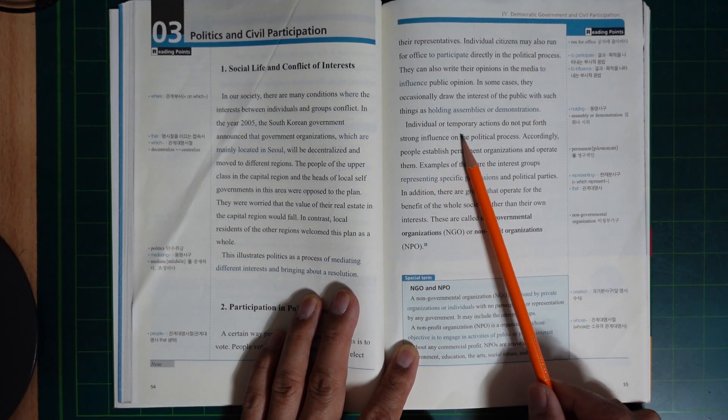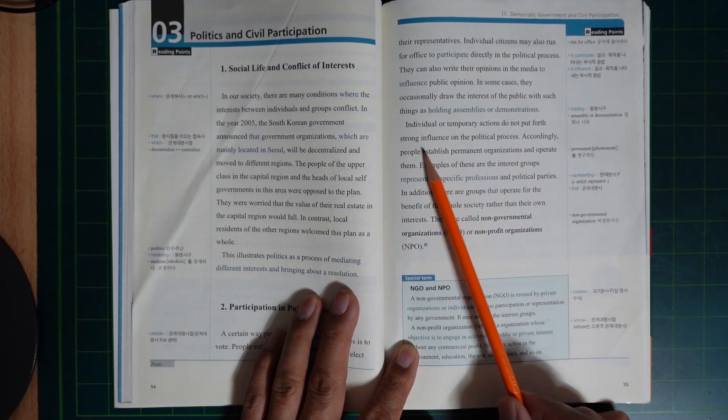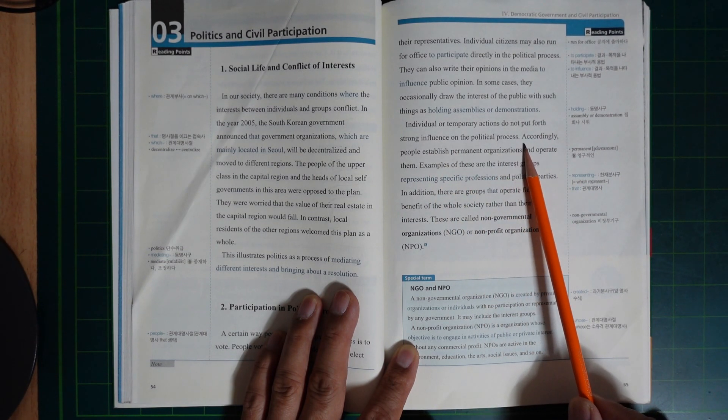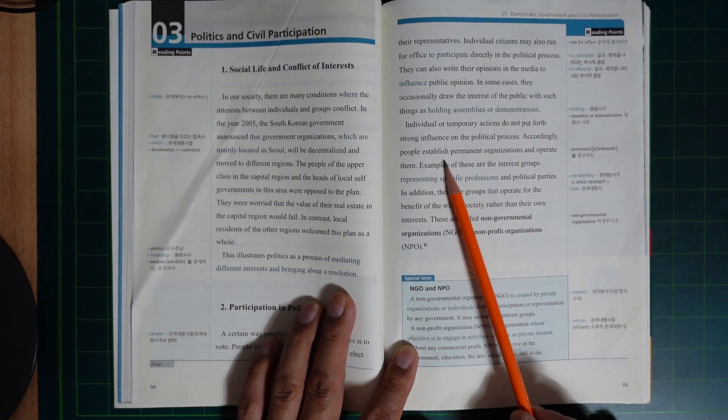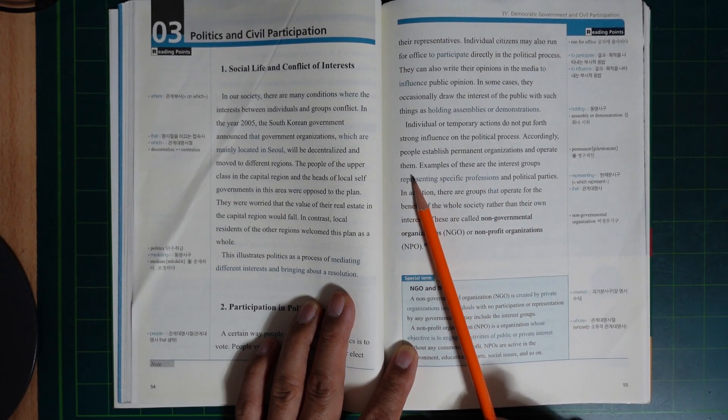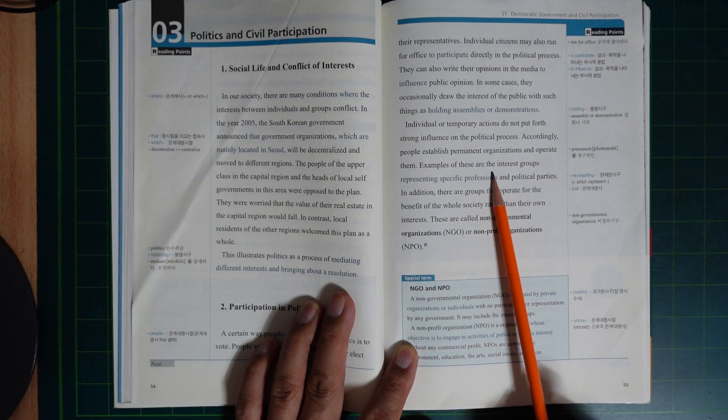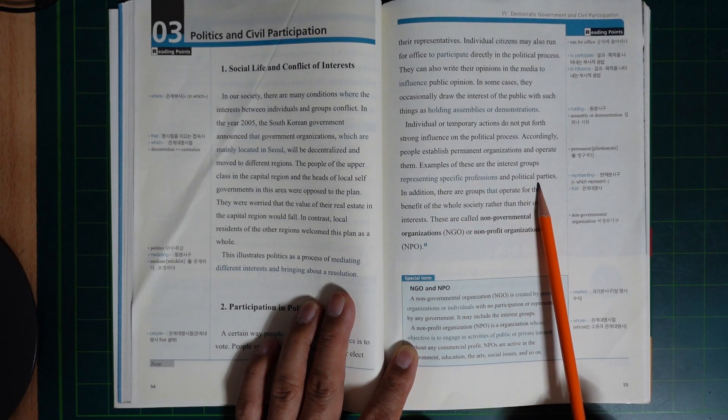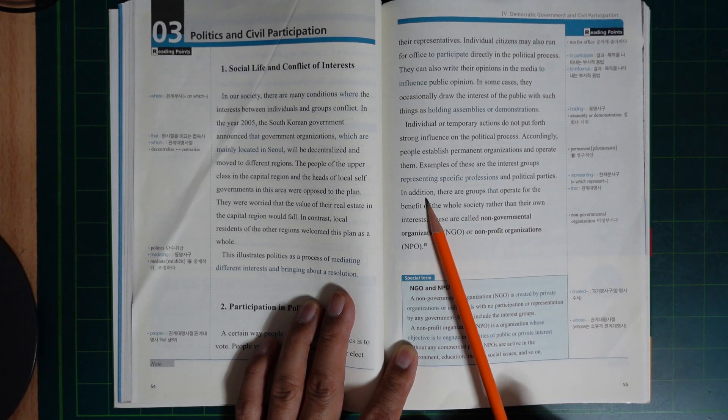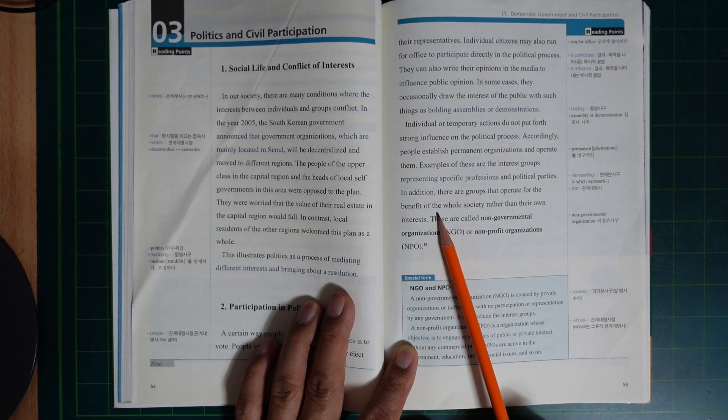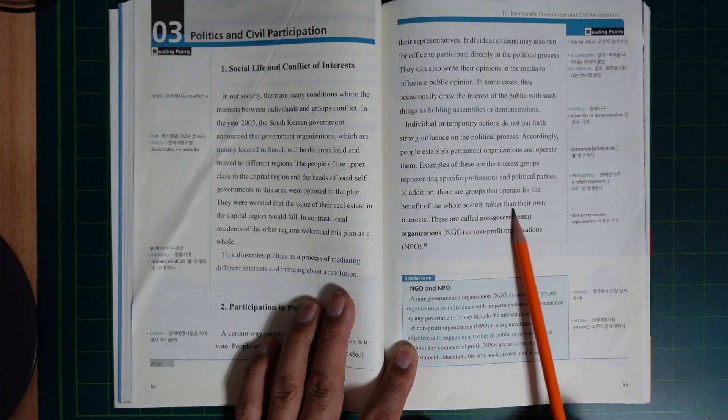Individual or temporary actions do not put forth strong influence on the political process. Accordingly, people establish permanent organizations and operate through them. Examples of these are interest groups representing specific professional...